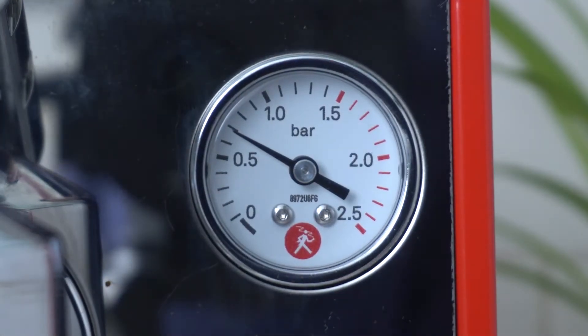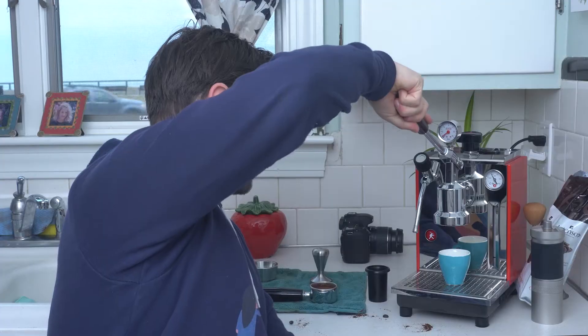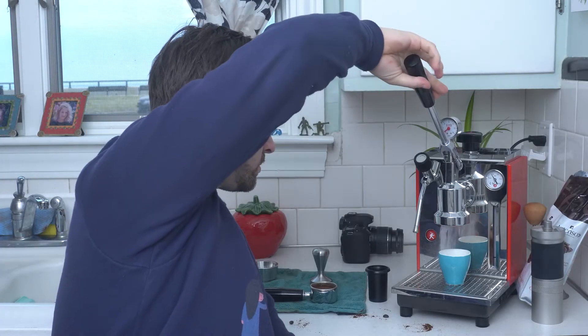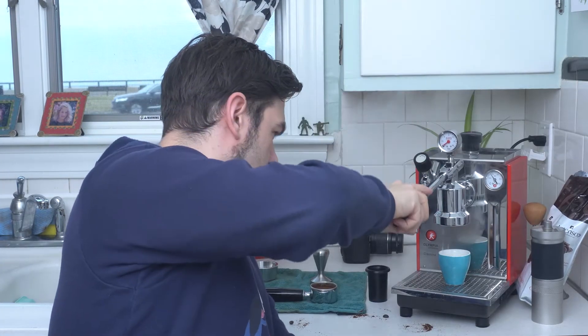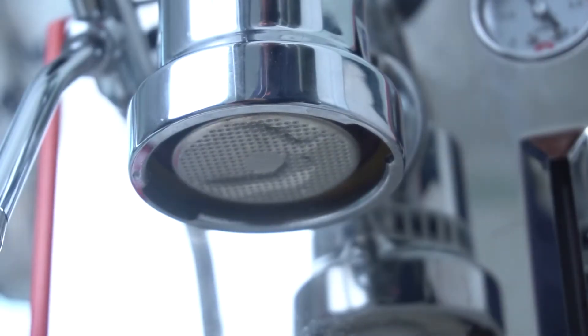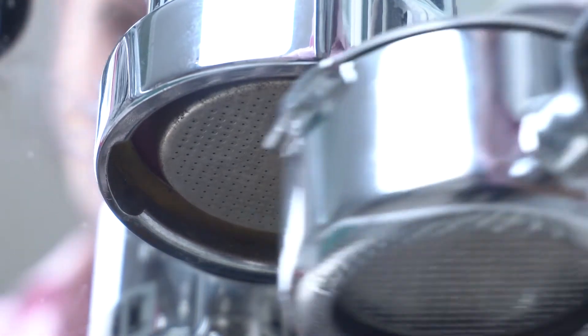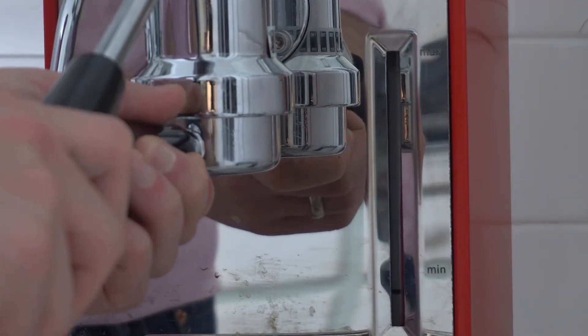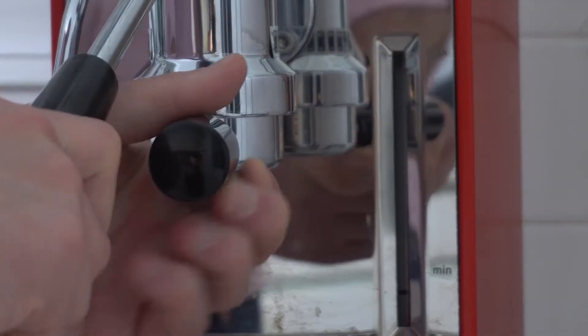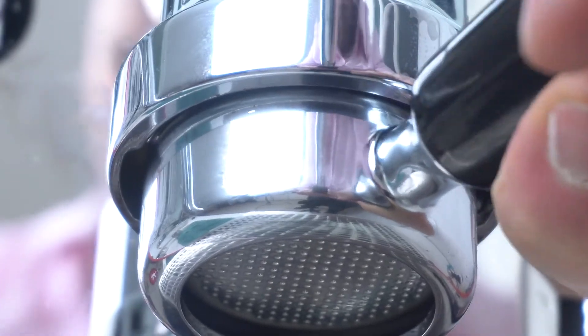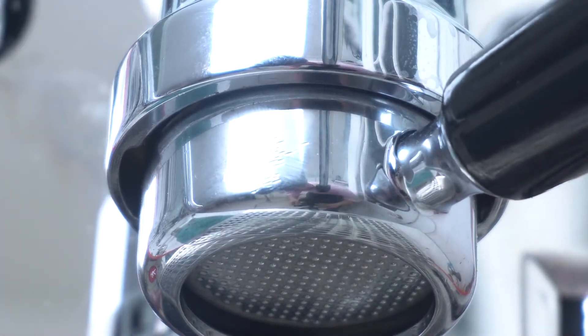The next step is to preheat the group head. I recommend using this water to also preheat your cup. Slowly lift the lever and let the water come out for a few seconds. Next up, lock the portafilter into the group. At first, it may not turn to the right so much. Mine barely did. But now that I've pulled a lot of shots already, it goes to the right a fair bit.